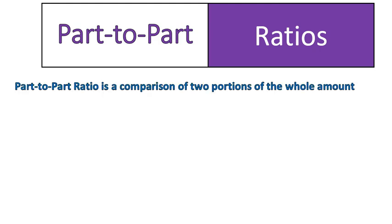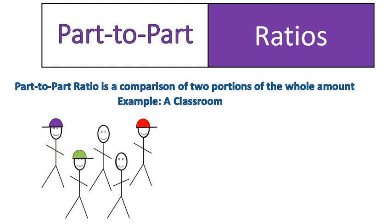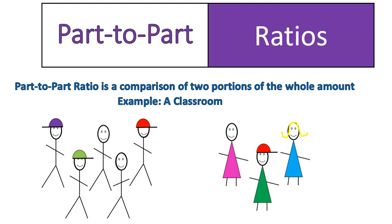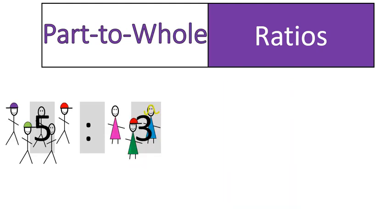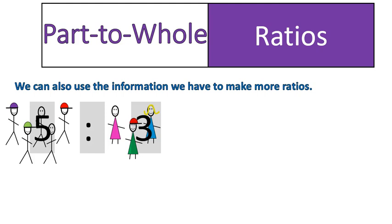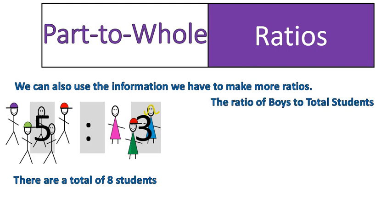A part-to-part ratio is a comparison between two portions of the whole amount. A common example for that is when you have a group of people or a classroom, where you have a boy group and a girl group, and you compare them. In this case, we would have a ratio of boys to girls of five to three. What we're also given, even though we're not told it explicitly, is that we can take this classroom and calculate the total population. If there's five boys and three girls, there's a total of eight students, and we can use that to make all sorts of different ratios. The ratio of boys to total students, five to eight. The ratio of girls to total students, three to eight.